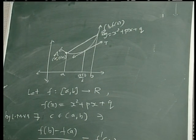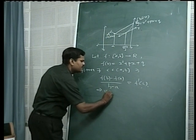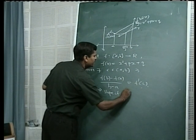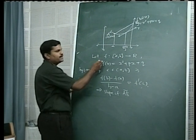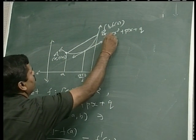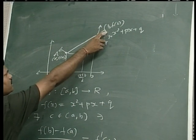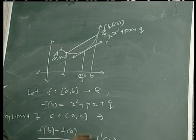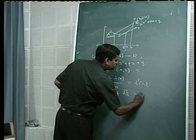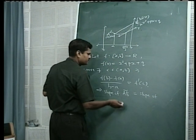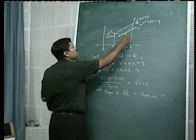The left hand side, f(b) minus f(a) upon b minus a, is the slope of the line joining the two points a and b — that is, the slope of the chord joining the two points a and b. Here a has coordinates (a, f(a)) and b has coordinates (b, f(b)). The slope is the difference in y-coordinates f(b) minus f(a) upon the difference in x-coordinates b minus a, and it equals f'(c). The geometrical meaning of f'(c) is the slope of the tangent line t.